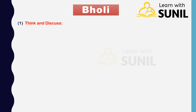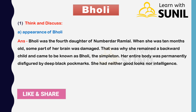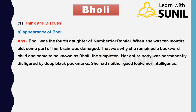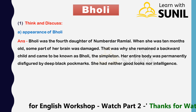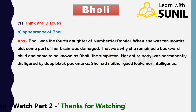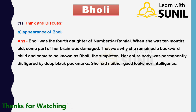Margin questions. First, think and discuss: A) Appearance of Bholi. Answer: Bholi was the fourth daughter of Numberdar Ramlal. When she was 10 months old, some part of her brain was damaged, which is why she remained a backward child and came to be known as Bholi the simpleton. Her entire body was permanently disfigured by deep black pockmarks. She had neither good looks nor intelligence.